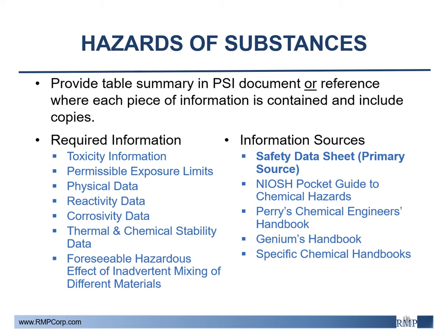The NIOSH Pocket Guide to Chemical Hazards is also a great resource for chemical data. Corrosivity data relates to chemical incompatibility with materials of construction. This data can be located in Perry's Chemical Engineers Handbook or in specific chemical handbooks created by various agencies — an example being the chlorine manual created by the Chlorine Institute. The necessity of corrosivity data can be shown through the example of liquid propane and aluminum, where there would be excessive corrosion of aluminum if it was used in liquid propane service. This should be documented as not allowed as a material of construction in the system. Lastly, the foreseeable hazardous effects of inadvertent mixing should be documented, which can be accomplished with a chemical compatibility chart.